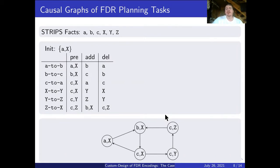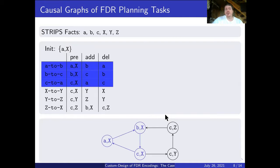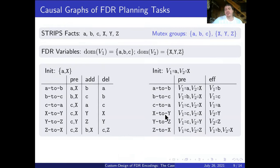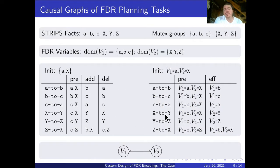Here's another example where we have six facts a, b, c and x, y, z, and we have six operators: three of them switching the value from a to b, b to c, and c to a but only if the fact x is set, and another three operators changing the value from x to y, y to z and z to x but only if the fact c is set. Now we can find two different mutex groups in this: a, b, c and x, y, z. We can decide to translate them directly into variables and we will end up with the causal graph with two vertices because we have two variables and that is fully connected.